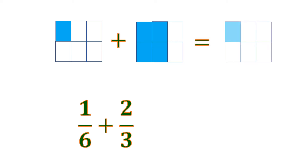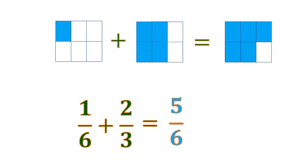Starting from 1 sixth, we're going to add the 4 sixths, or 4 shaded parts out of 6, so it becomes 5 shaded parts out of 6. That means 1 sixth plus 2 thirds is equal to 5 sixths.